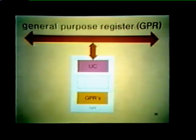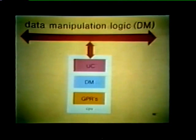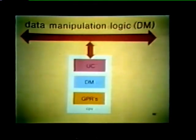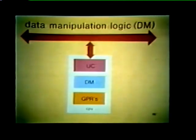The GPRs provide internal storage and allow the processor to perform many operations without having to tie up the unibus. We can store information in these GPRs, manipulate it, and retrieve it in much the same manner as core memory locations. The third major element in the processor is the data manipulation logic, or DM. The DM performs arithmetic and logical operations, decodes instructions, and controls information flow into and out of the GPRs.